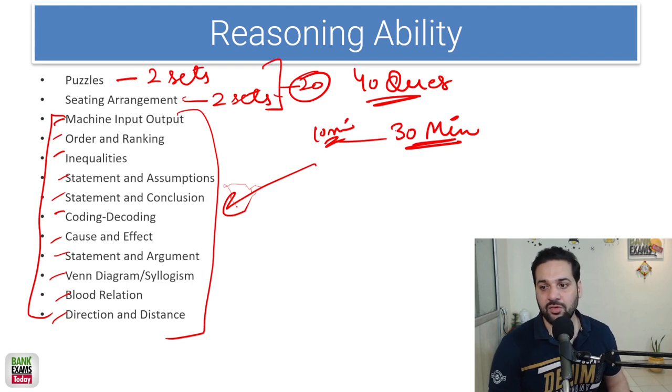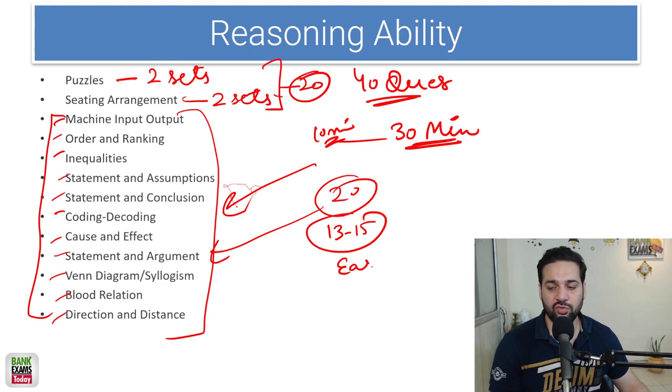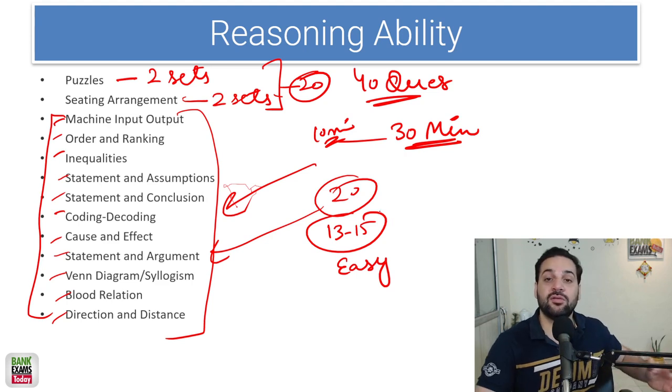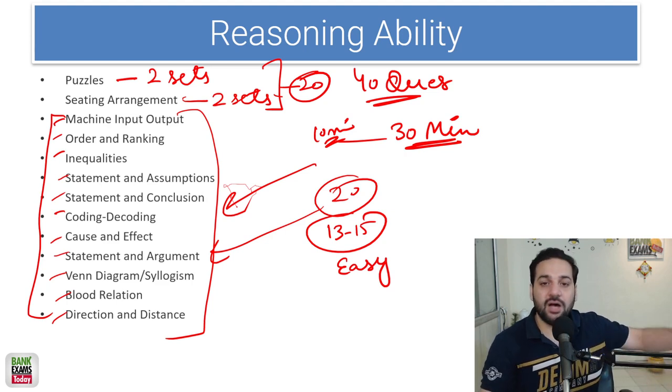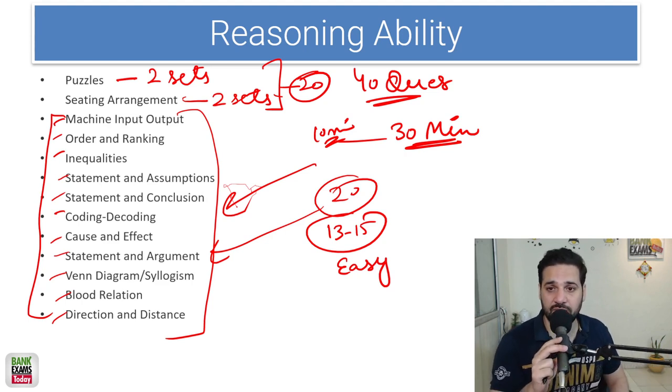13 se 15 question bhi ho easy most of the times, 5 questions moderate or difficult. To 13, 14, 15 questions easy hai, to pehle woh aap 13-15 questions aap le lo, woh karlo and then move forward, then aap sitting arrangement pe karo ya puzzle karo. Poora aapko paper attempt nahi kar sakte, poora reasoning ability attempt nahi kar sakte, that is difficult. I mean it's difficult to score like more than 30 actually.